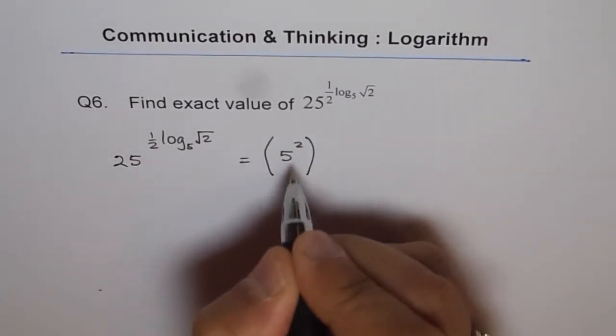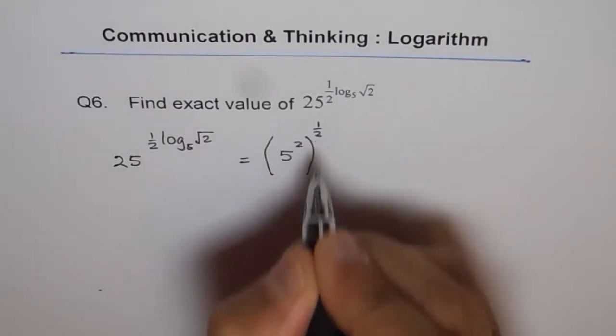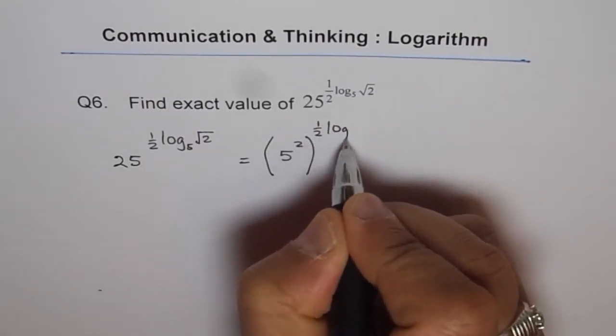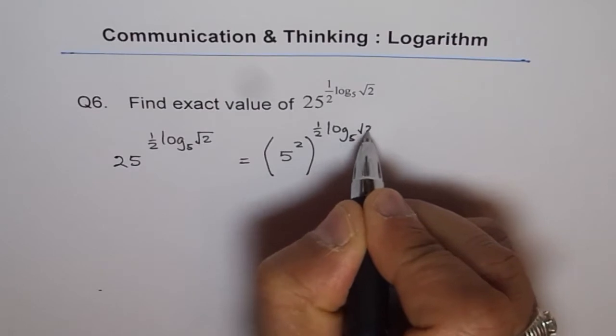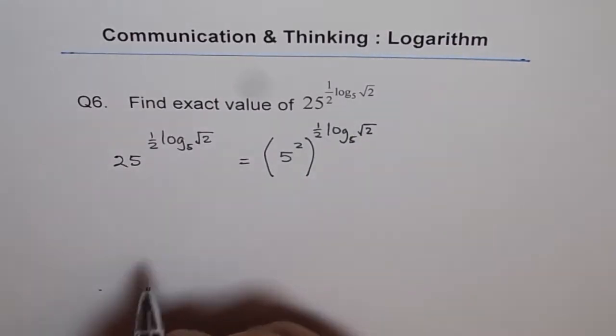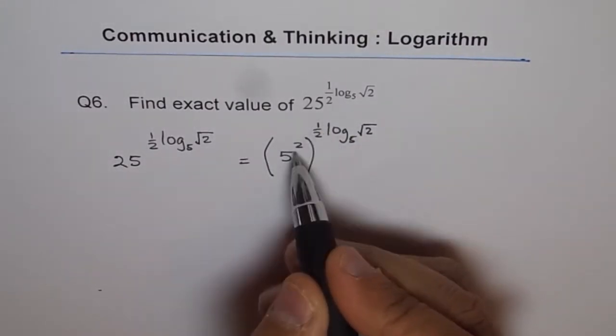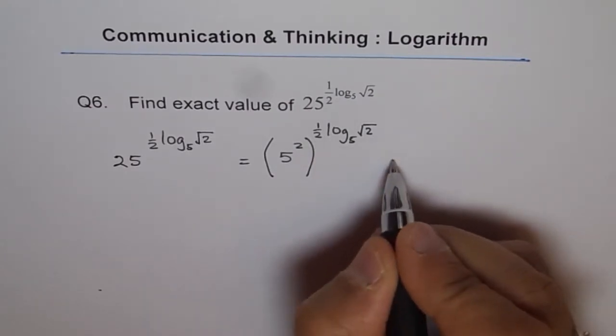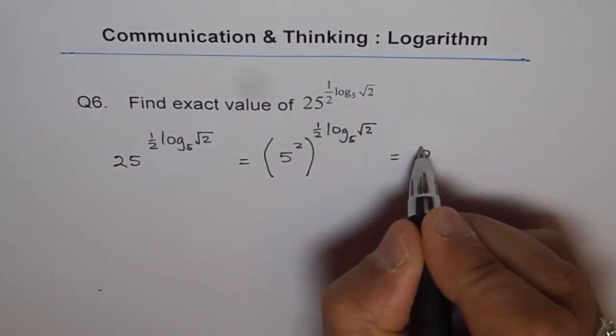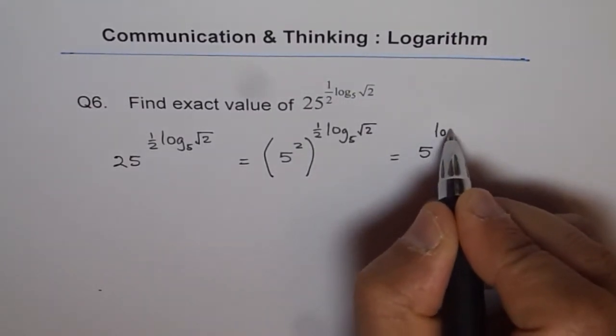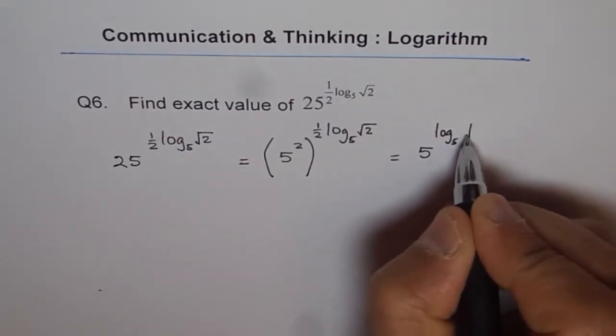Let me write it like this. Everything to the power of half log to the base 5 of square root of 2. Now when I multiply half with 2, it becomes 1. And so I can write this as 5 to the power of log to the base 5 of square root 2.